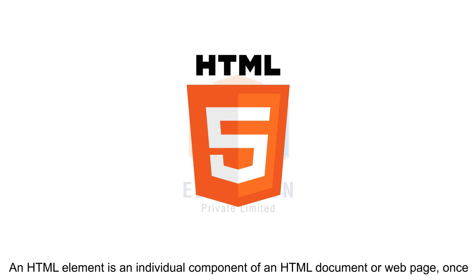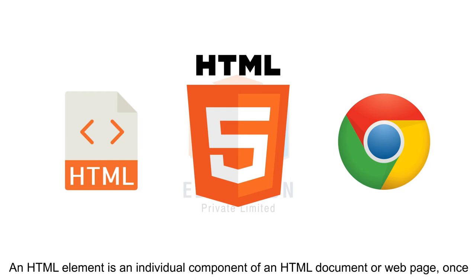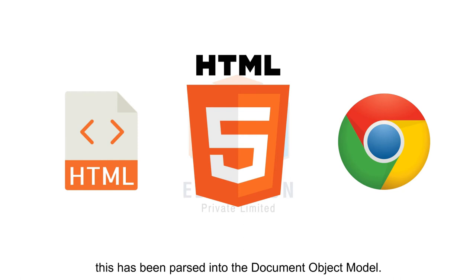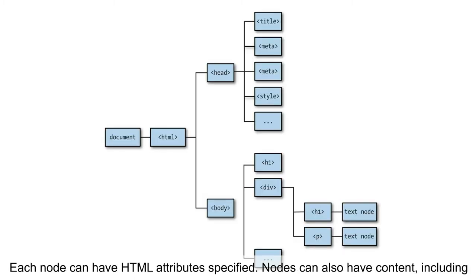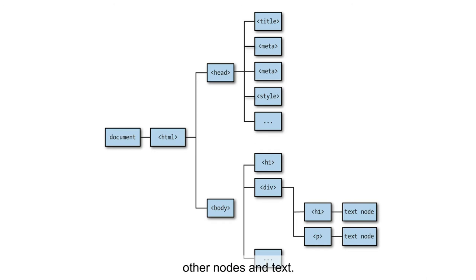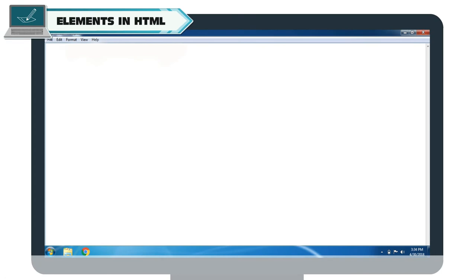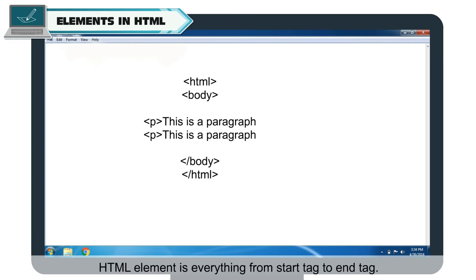An HTML element is an individual component of an HTML document or web page. Once parsed into the Document Object Model, HTML is composed of a tree of HTML nodes such as text nodes. Each node can have HTML attributes specified, and nodes can also have content including other nodes and text. An HTML element is everything from the start tag to the end tag.